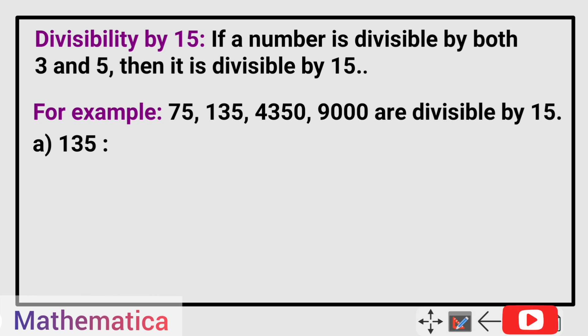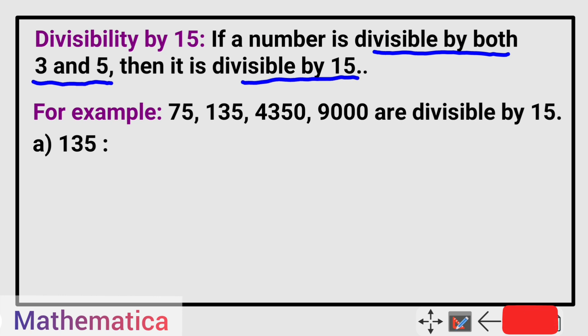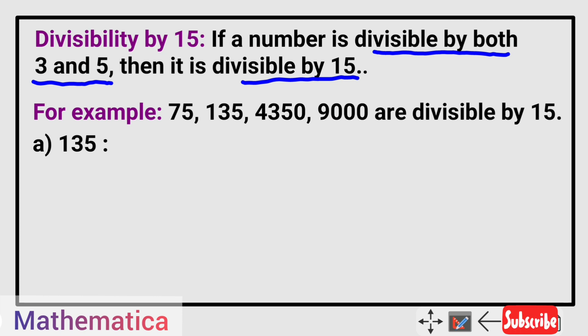Divisibility by 15: if a number is divisible by both 3 and 5, then it is divisible by 15. So we have to check the divisibility rules of both 3 and 5. If the sum of all digits of a number is divisible by 3, then the number is divisible by 3. And what about the divisibility rule of 5?